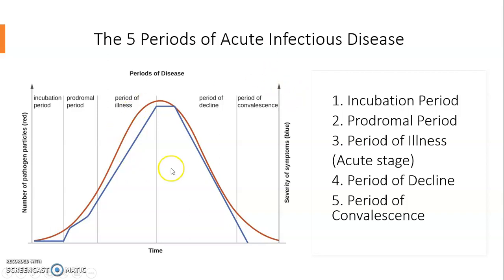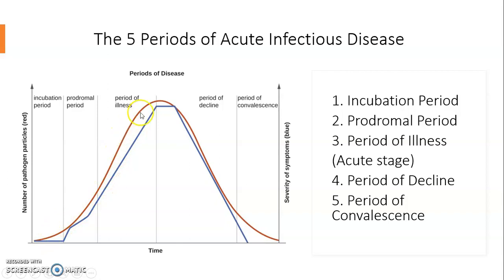As you can see over here to my left, the red line represents the number of pathogen particles, and the blue line represents the severity of symptoms of diseases. The red line and the blue line both start off at zero, but the red line continuously increases and then comes right back down to decrease and ends in the period of convalescence.